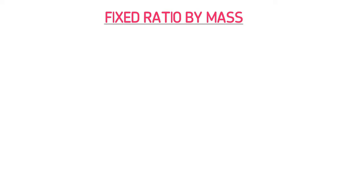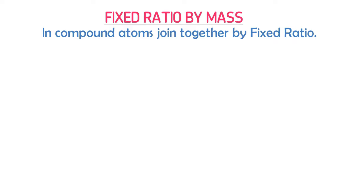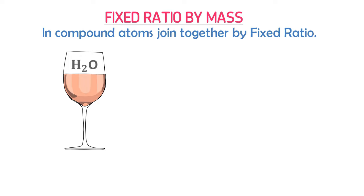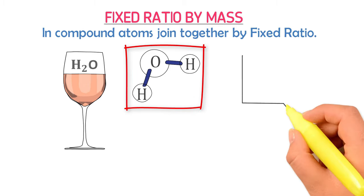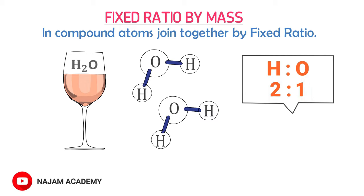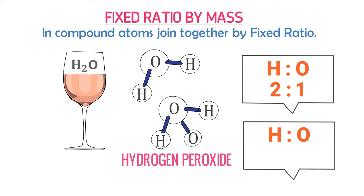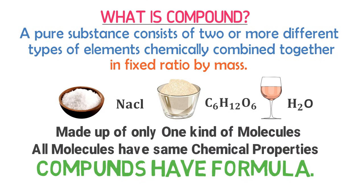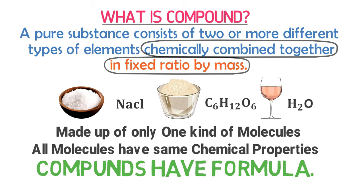What is meant by fixed ratio by mass? It means that in a compound, atoms combine together in a fixed ratio. For example, consider water — its formula is H2O. In a single molecule of water, there are two hydrogen atoms and one oxygen atom; the ratio is 2:1. If you change this ratio, you may get something new. For example, adding one more oxygen atom gives hydrogen peroxide, where the ratio of hydrogen to oxygen becomes 2:2. Therefore, atoms must be chemically combined in a fixed ratio by mass to get the desired compound.